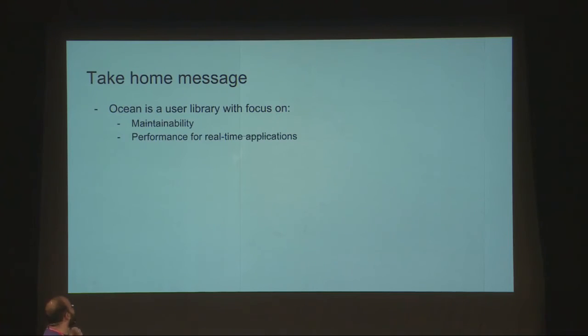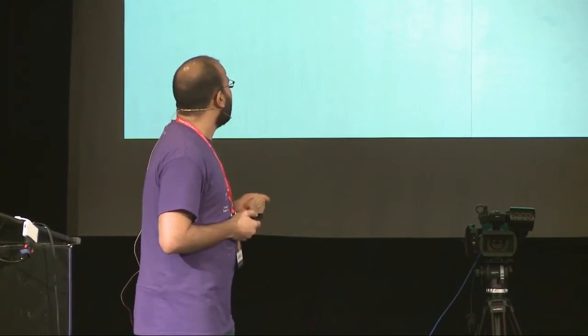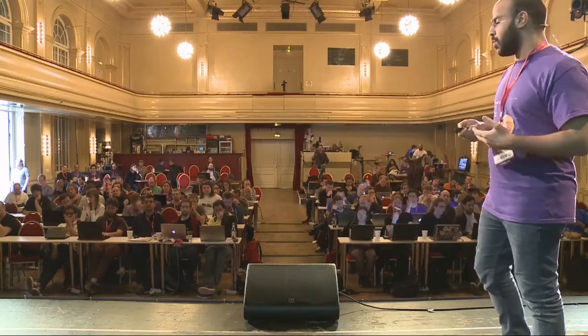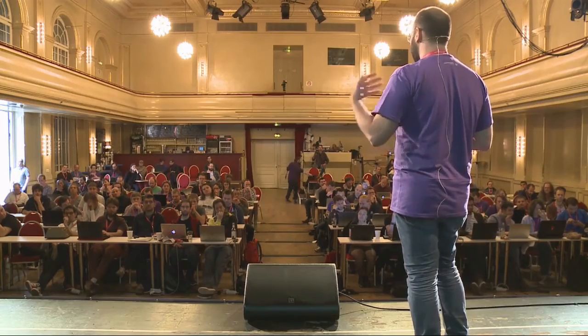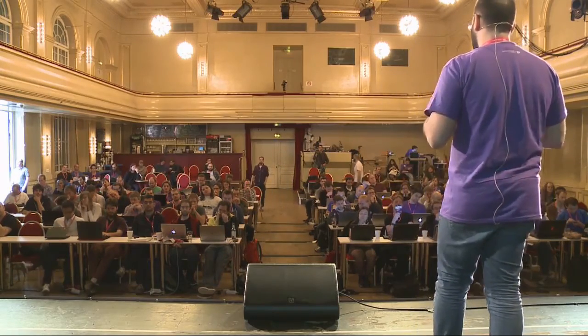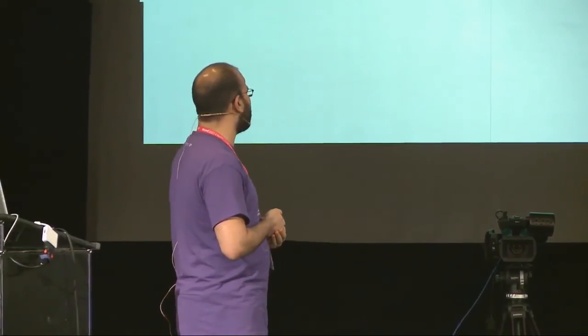The take-home message: remember the Ocean library with a focus on maintainability and performance for real-time applications. It provides an app framework — a nice way if you have a long-term application and want proper support, then you fill in the blanks. The contiguous serializer is a very nice way to manage your data and keep versioning. You can even have a live server with different versions, readers and writers, and bring some up and some down without downtime or putting the system down for an update.